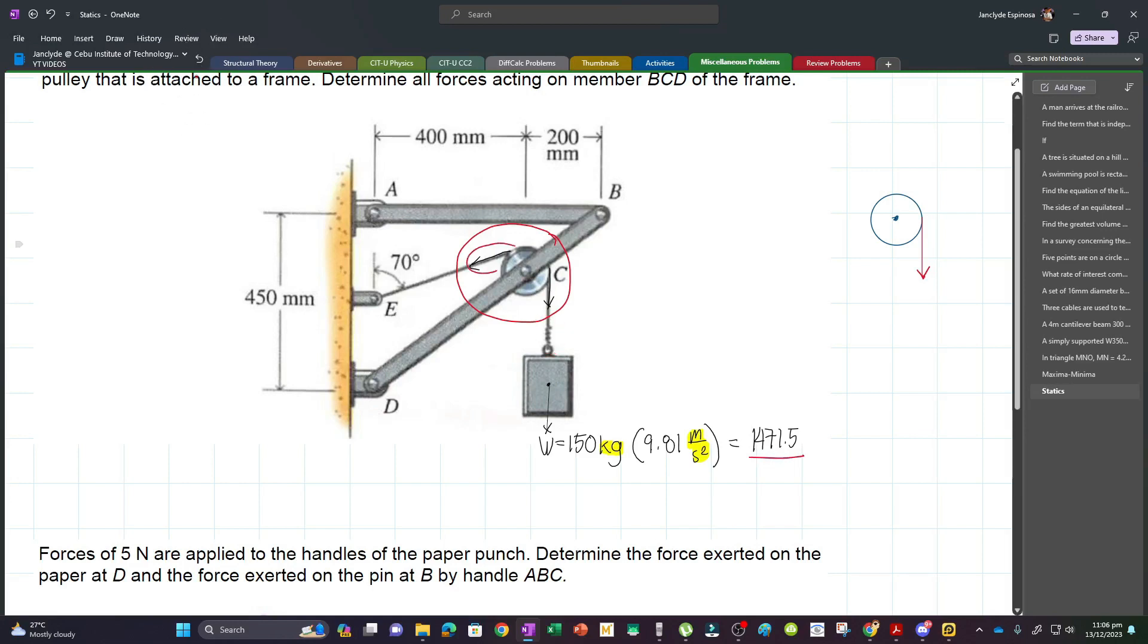The cable is tensile, so away from the body are the reaction forces. The value of this force is 1471.5 because they're connected along the same line. But it's inclined now. This 1471.5 will have components, force along x and force along y.